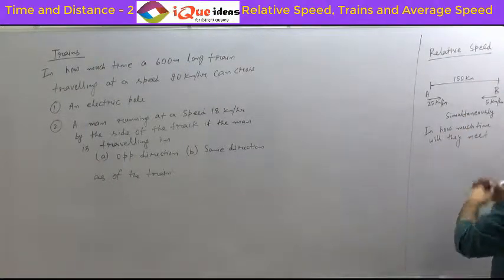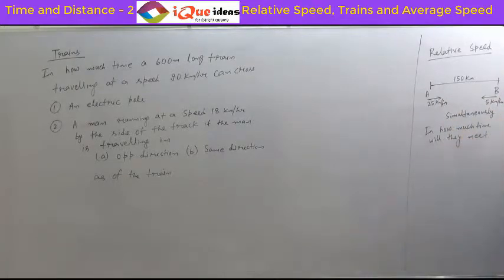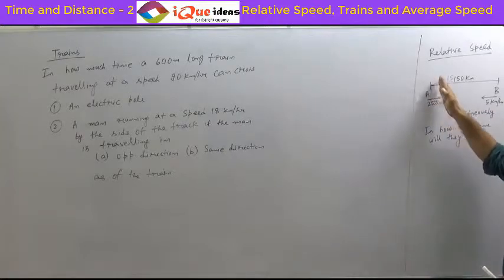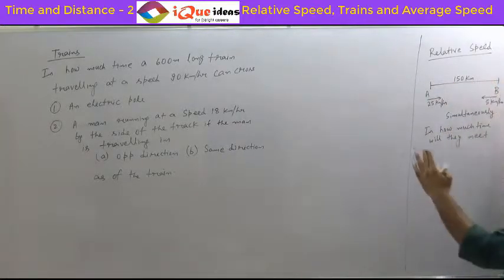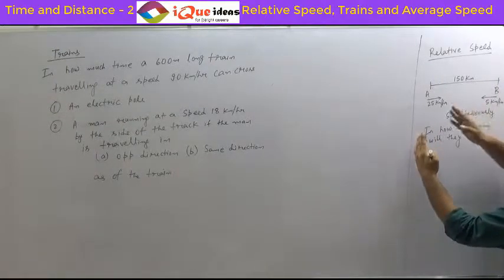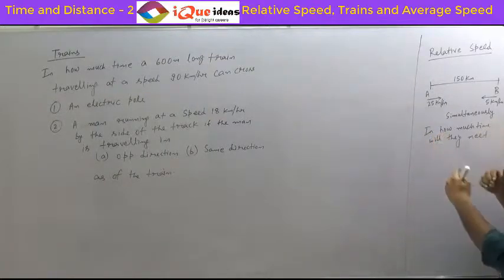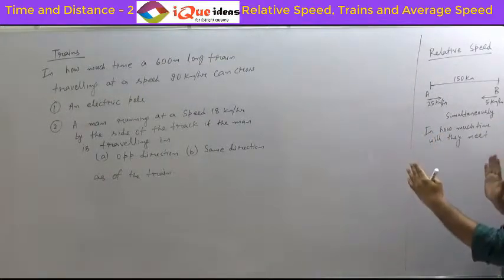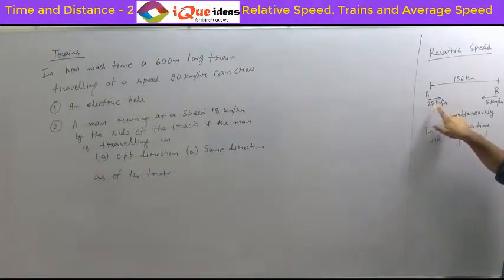Now what is happening? Both are moving and they have started simultaneously. In one hour, this person has travelled 25 km, and in one hour this person has travelled 5 km. So in total, how much have they travelled? They have reduced the whole distance by 25 plus 5, that is 30 km. So effectively they have travelled 30 km in one hour. This 30 is called relative speed.